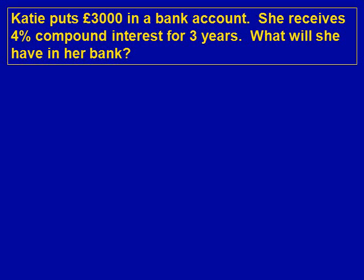Katie puts £3,000 in a bank account. She receives 4% compound interest for 3 years. What will she have in her bank? We will try and understand what the question is asking us to do. Katie puts £3,000 in her bank account and every year she gets 4% interest, so it goes up by 4% each year. It does this for 3 years, so we want to work out how much money she'll have at the end.